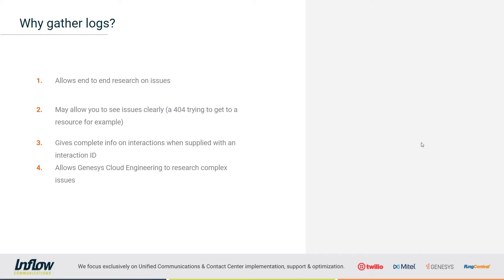The correlation ID allows Genesis Cloud to track every occurrence through the system, whether it be an interaction or a UI function that's not working. The logs may also allow you to see issues clearly — such as getting a 404 trying to reach a resource, or specific permissions being missing. Some of the time these logs will actually show you the issue in plain text, making your life a little bit easier. They can also give complete info on interactions when supplied with an interaction ID, allowing you to track a call end-to-end through the platform.